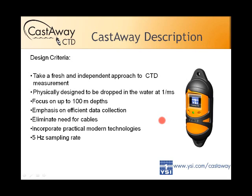The Castaway has a terminal velocity that keeps it falling at about one meter per second without any added weight. Another constraint was focusing on shallow water — less than 100 meters deep. Estimates suggest 50 to 75% of all CTD casts are made in those depths, and there's not really a specific device for that. The emphasis was on usability and efficient data collection — eliminating the need for cables or connectors, incorporating modern technologies such as GPS and Bluetooth, and sampling at 5 Hz to ensure proper data.